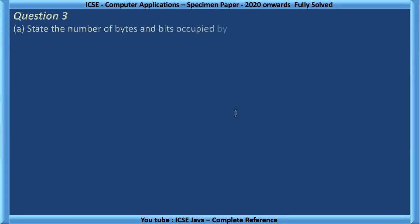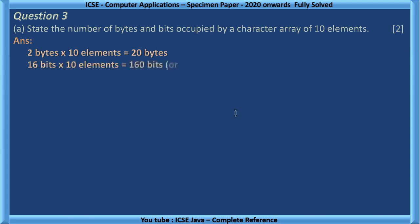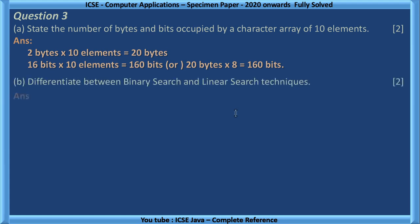Question 3. State the number of bytes and bits occupied by a character array of 10 elements. We know character data type has 2 bytes, and 10 elements are there in array. So, 2 bytes into 10 elements equal to 20 bytes. If we need to convert into bits, we can take it as 16 bits into 10 elements. Otherwise, we can also calculate 20 bytes into 8. That gives in bits.